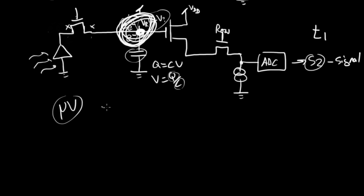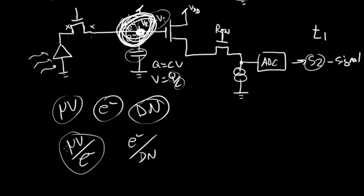And there will be some conversion gain for the system in terms of microvolts per electron or electrons per digital number. And this in particular, microvolts per electron, is just mostly determined by this integration capacitor there. The electrons per DN is determined by a lot more.